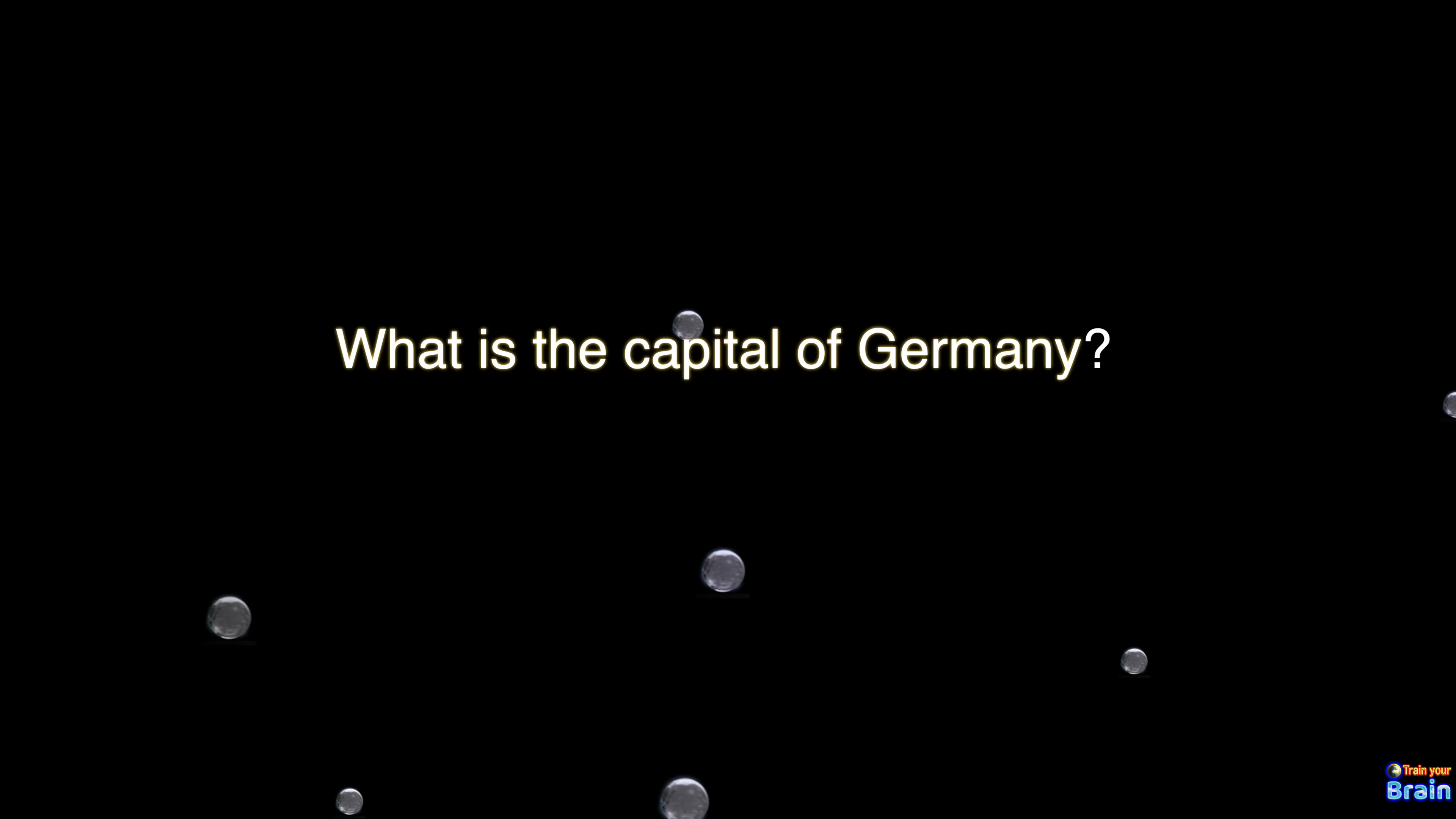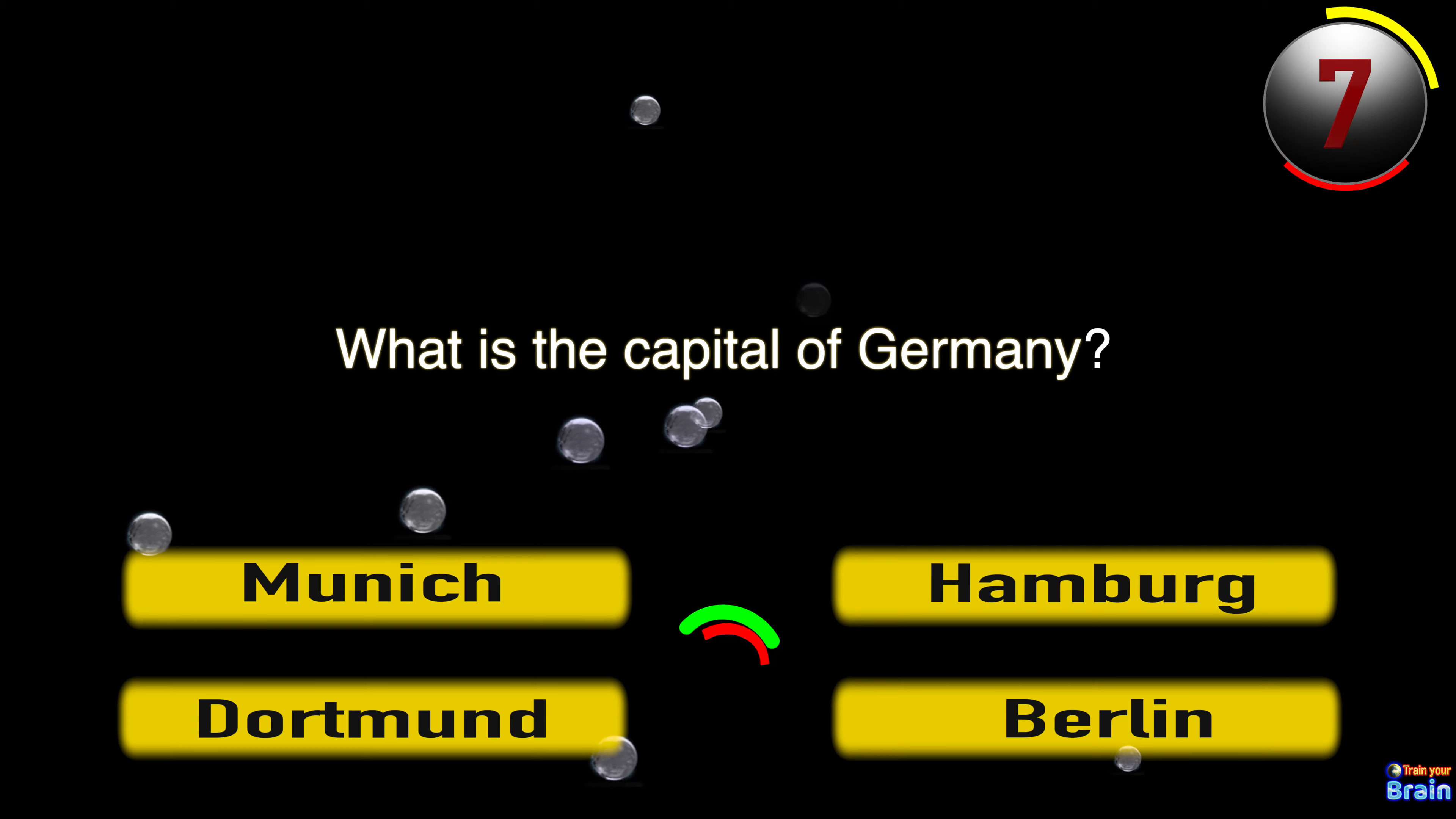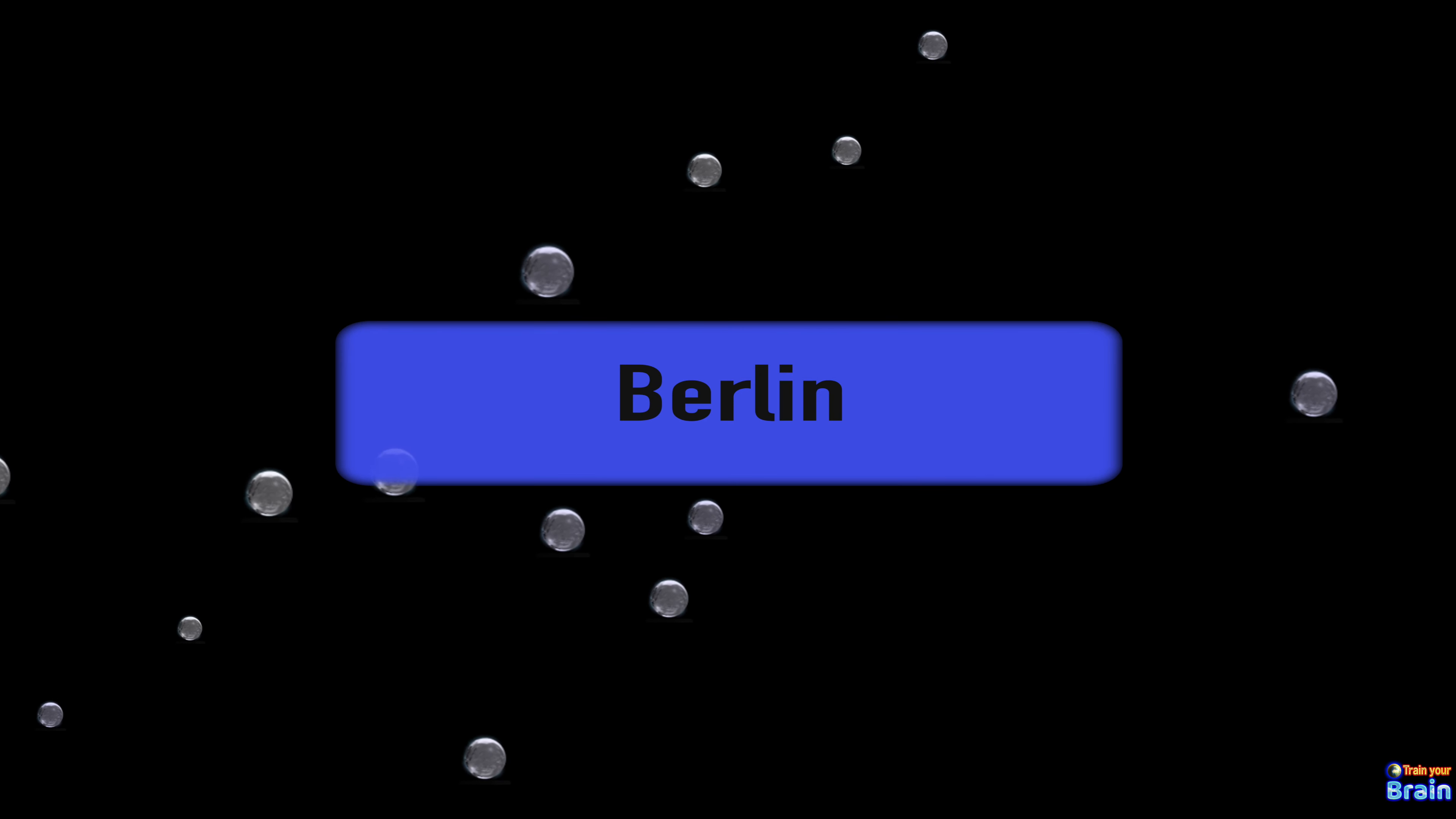What is the capital of Germany? Munich, Hamburg, Dortmund, Berlin. And this is Berlin.